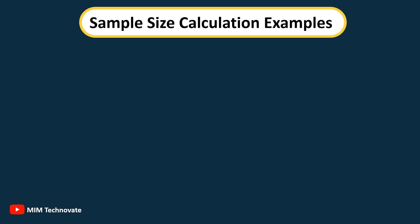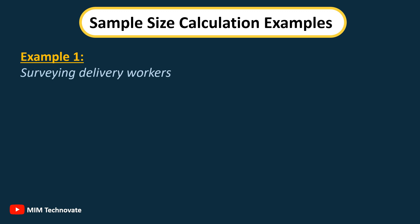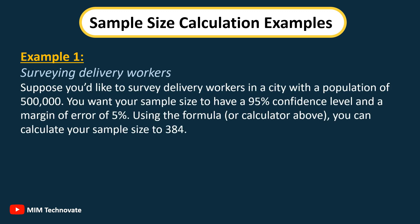Real-world sample size calculation examples. Example 1 — surveying delivery workers: suppose you'd like to survey delivery workers in a city with a population of 500,000. You want your sample size to have a 95% confidence level and a margin of error of 5%. Using the formula or calculator, you can calculate your sample size to be 384.